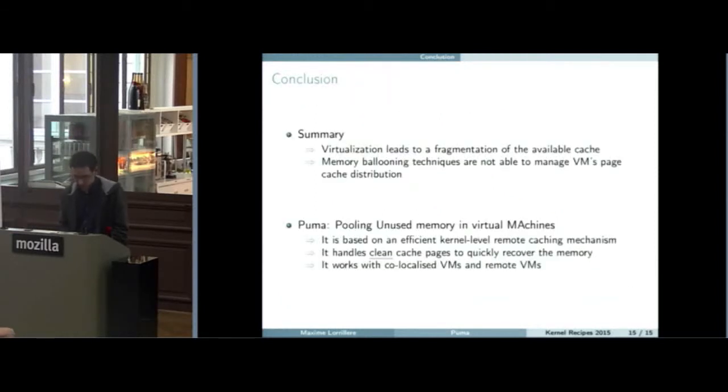To summarize, we presented PUMA. This is a mechanism to pool unused memory between virtual machines. This is between virtual machines, but it may be used between physical hosts. It does not depend on a hypervisor. As it is a kernel-based mechanism, it allows us to use any application that is I/O intensive to improve its performance.